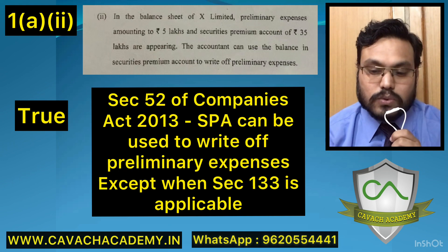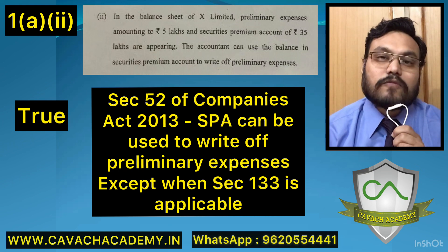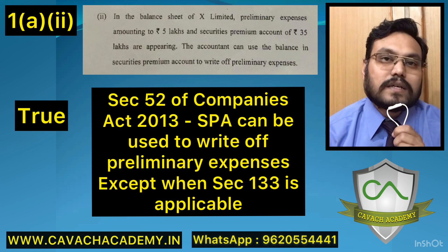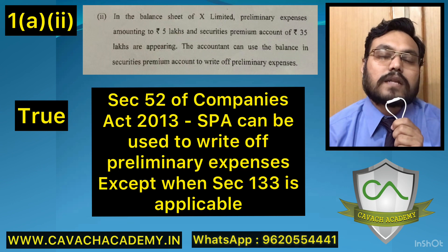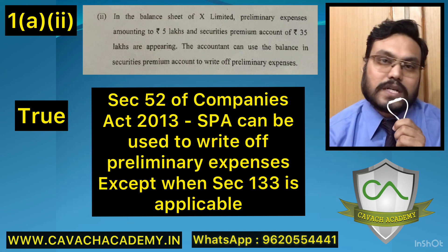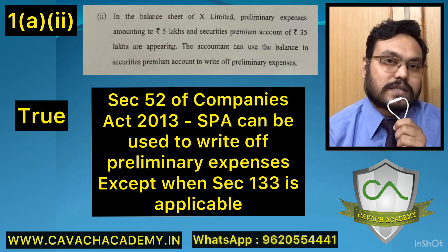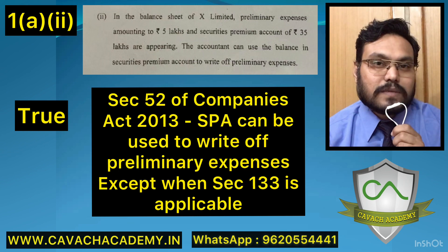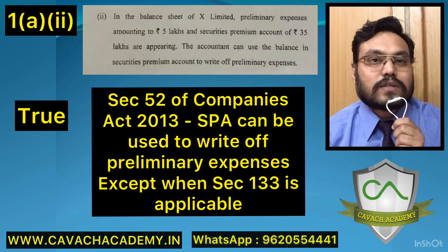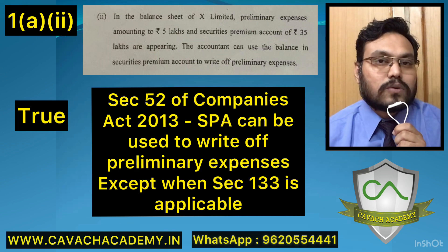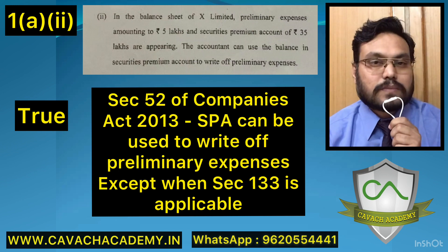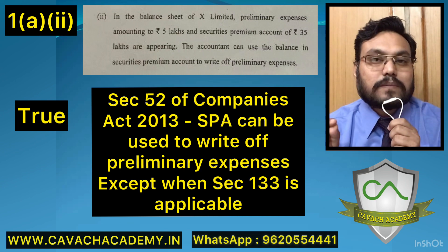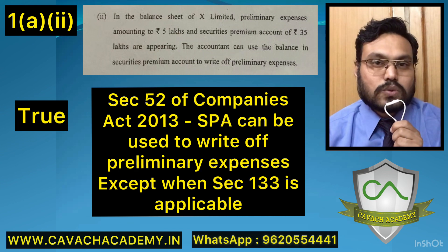The accountant can use the securities premium account balance to write off preliminary expenses because the securities premium account has five uses. As per Section 52 of the Companies Act 2013, there are five purposes for which the securities premium account can be used, and one of those purposes is to write off preliminary expenses. However, there is a different set of companies for whom Section 133 is applicable — meaning they must comply with accounting standards. Those companies cannot use the securities premium account for writing off preliminary expenses.